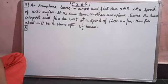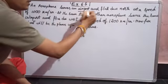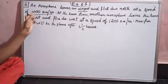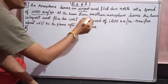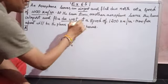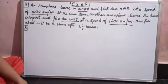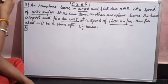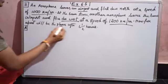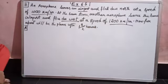Welcome to this problem from Exercise 6.5. An aeroplane leaves an airport and flies due north at a speed of 1000 kmph. At the same time, another aeroplane leaves the same airport and flies due west at a speed of 1200 kmph. We need to find the distance between the two planes after one and a half hours.